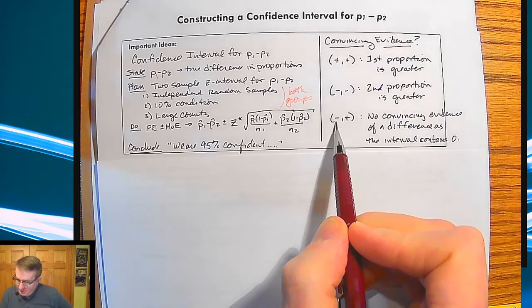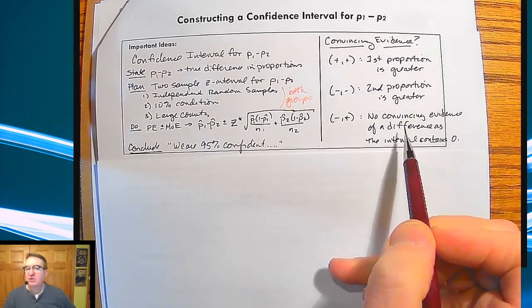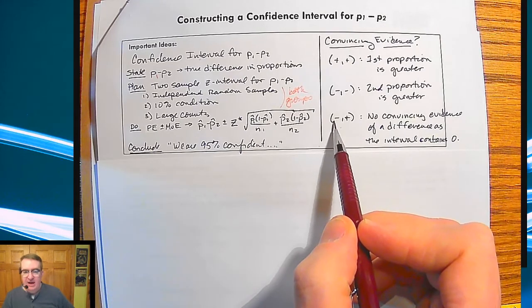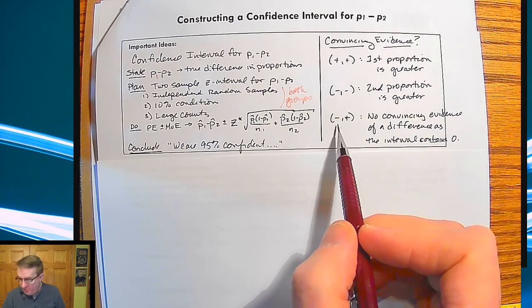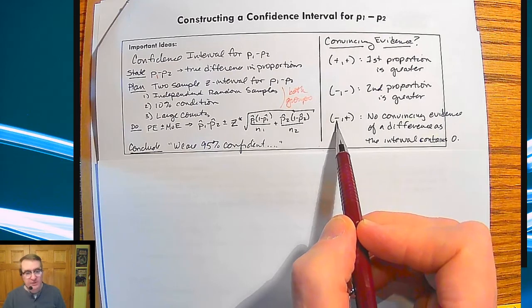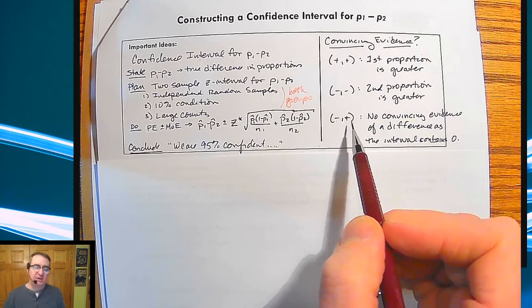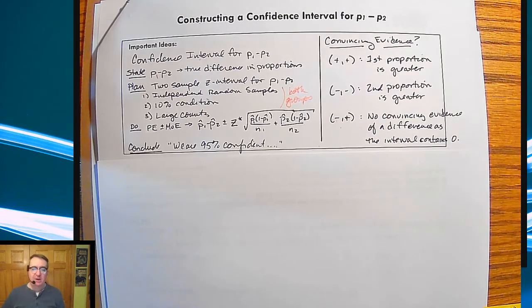So you got minus. If you're going from negative to positive, that means that there is no convincing evidence because you're containing zero. So if it's negative, that means the second, there is a greater proportion of the second population. And if it's positive, then it's going to mean that the first population is bigger than the second population.